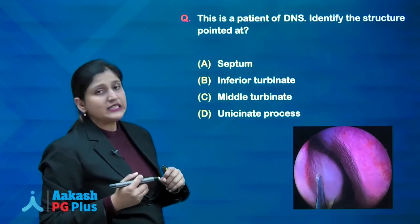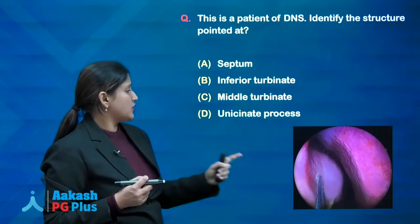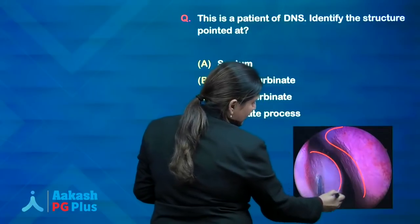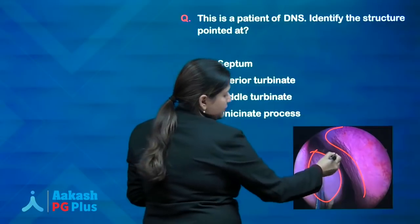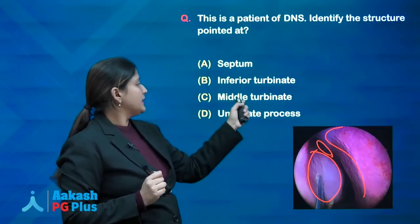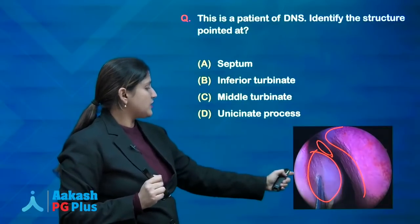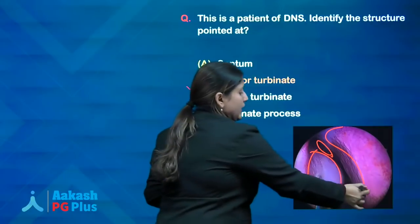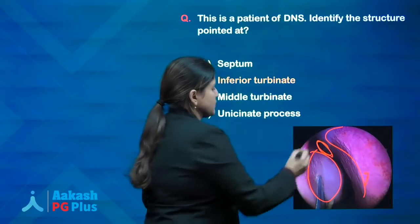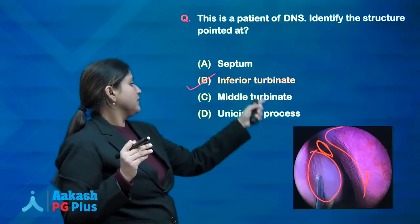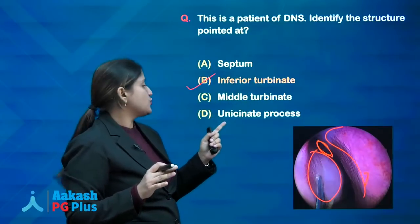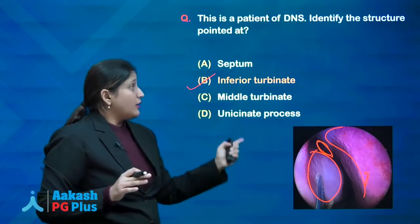This is a patient of DNS — deviated nasal septum. Identify the structure pointed at. The deviated nasal septum is visible, and the structure to identify is the inferior turbinate. If pointed to the septum, the answer is septum; to the lower structure, it is the inferior turbinate; above that is the middle turbinate. On anterior rhinoscopy, the most prominently visible structures are the inferior turbinate and the septum. Middle turbinate is sometimes visible; the uncinate process is difficult to visualize on anterior rhinoscopy.